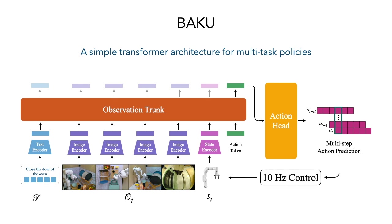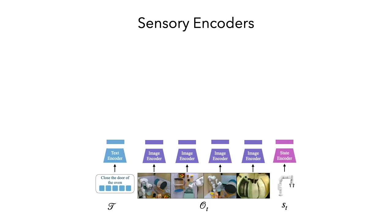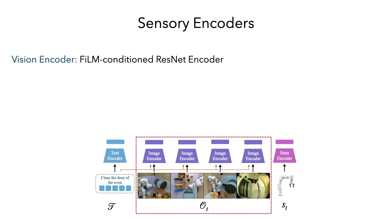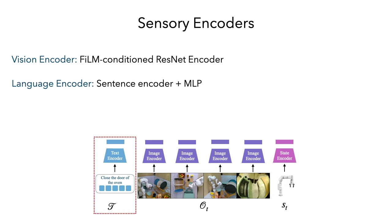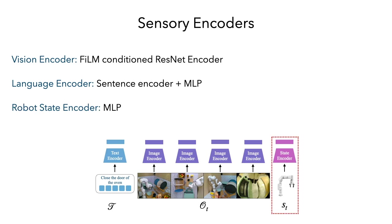Baku enables real-world robot control at a 10Hz closed-loop frequency. For vision, we use a FiLM-conditioned ResNet encoder as our visual encoder. The task instruction is provided in the form of text and is encoded through a sentence encoder followed by an MLP to project it to a suitable dimension. The robot state is projected to the same dimensionality as the other input embeddings through an MLP.